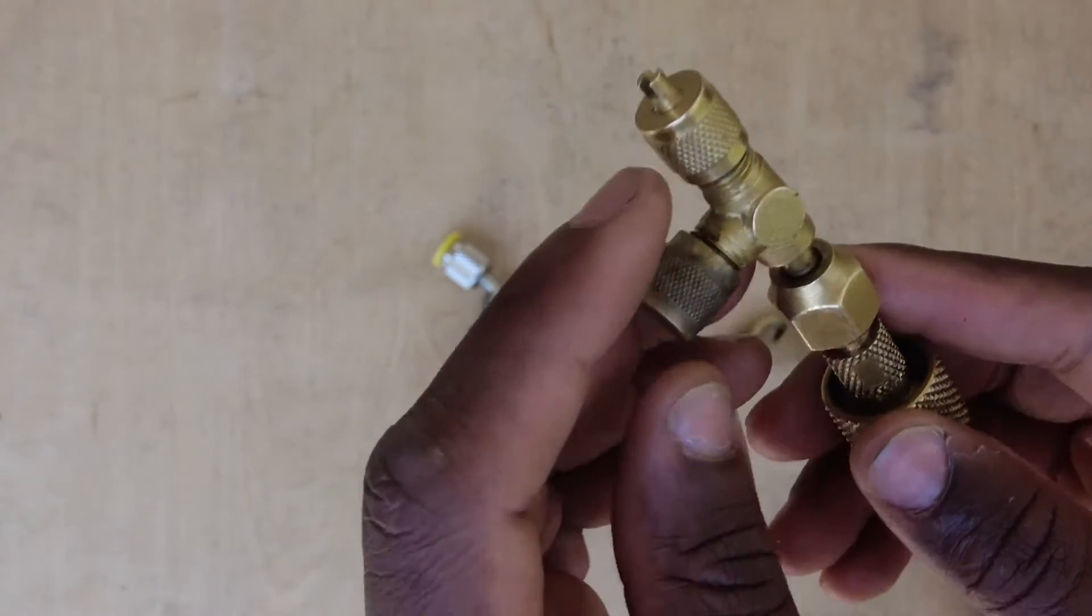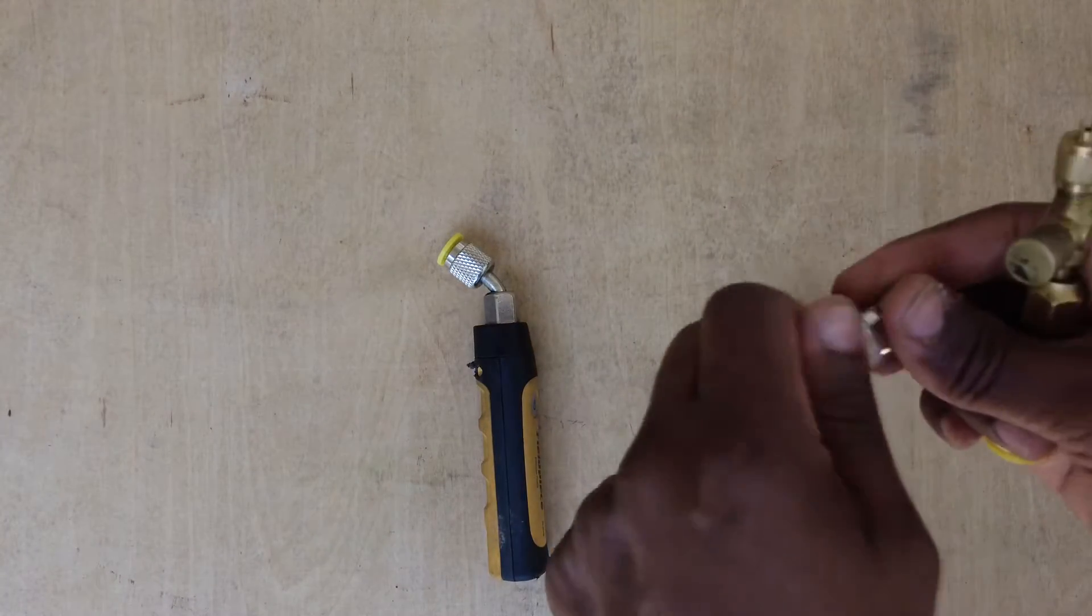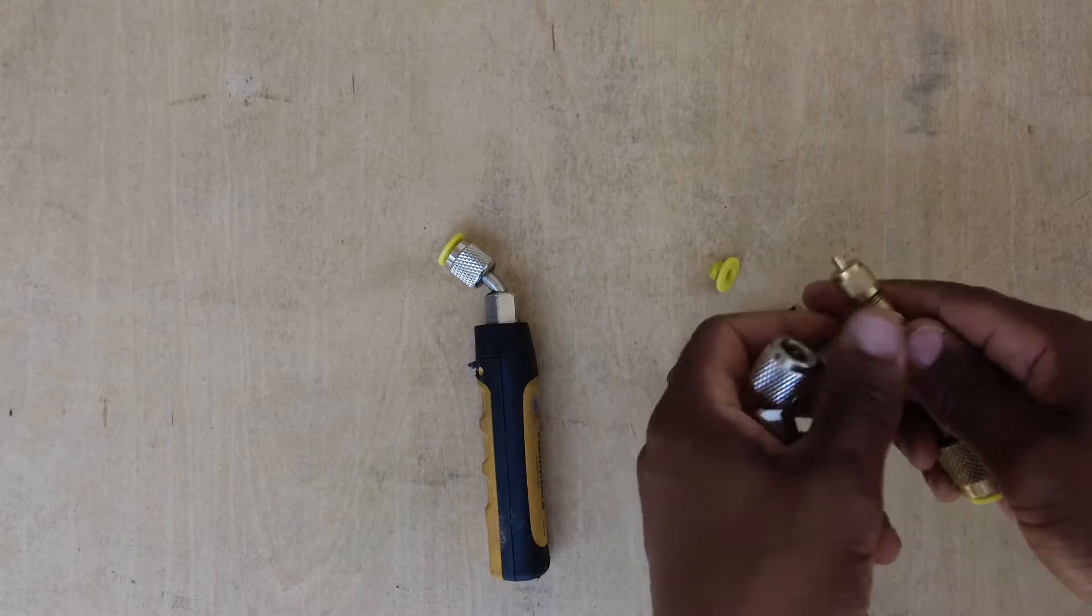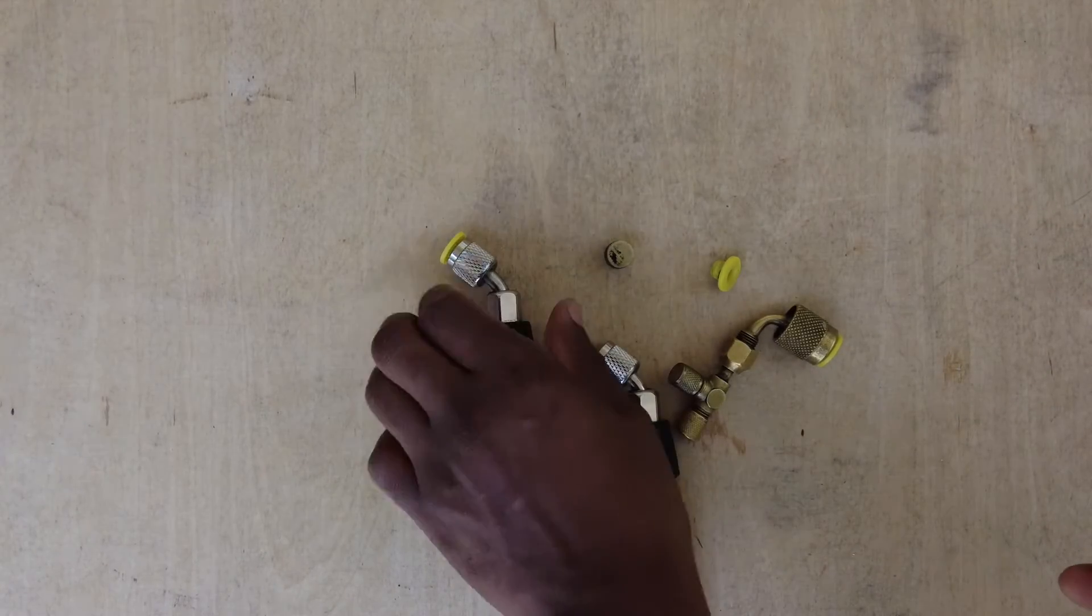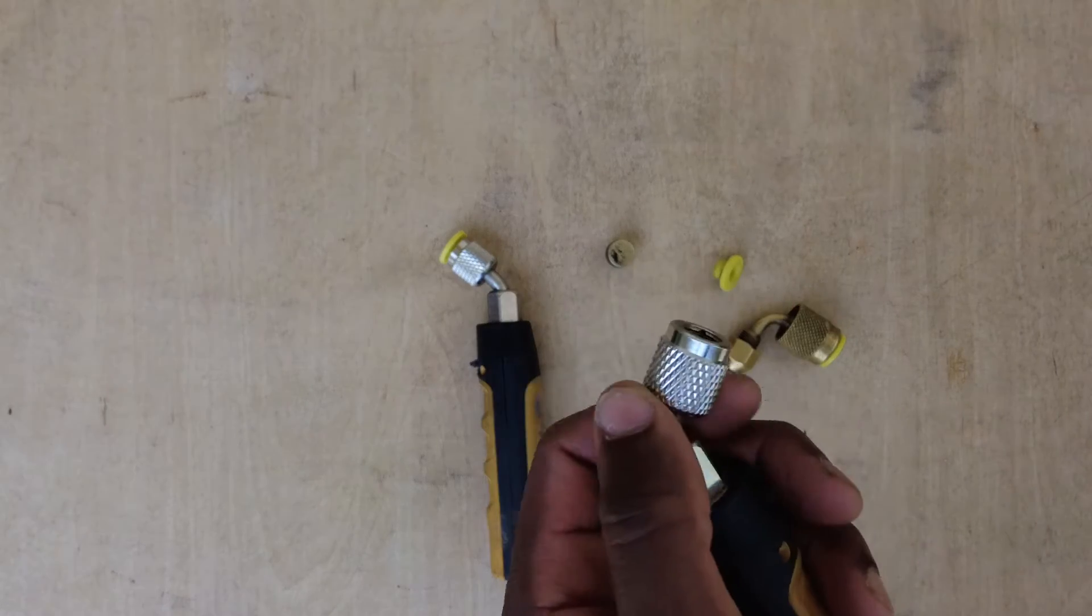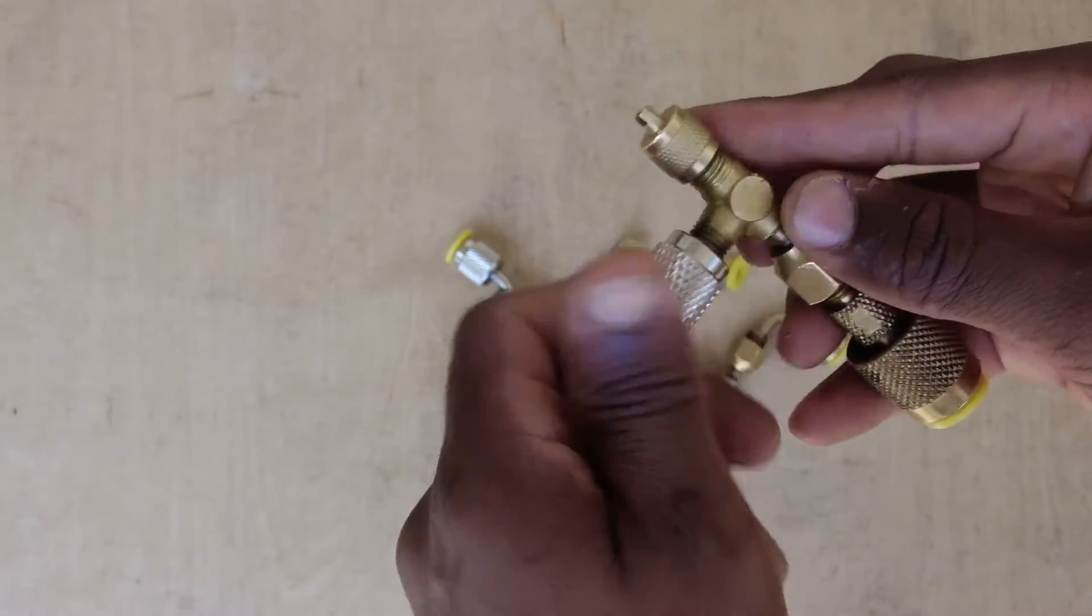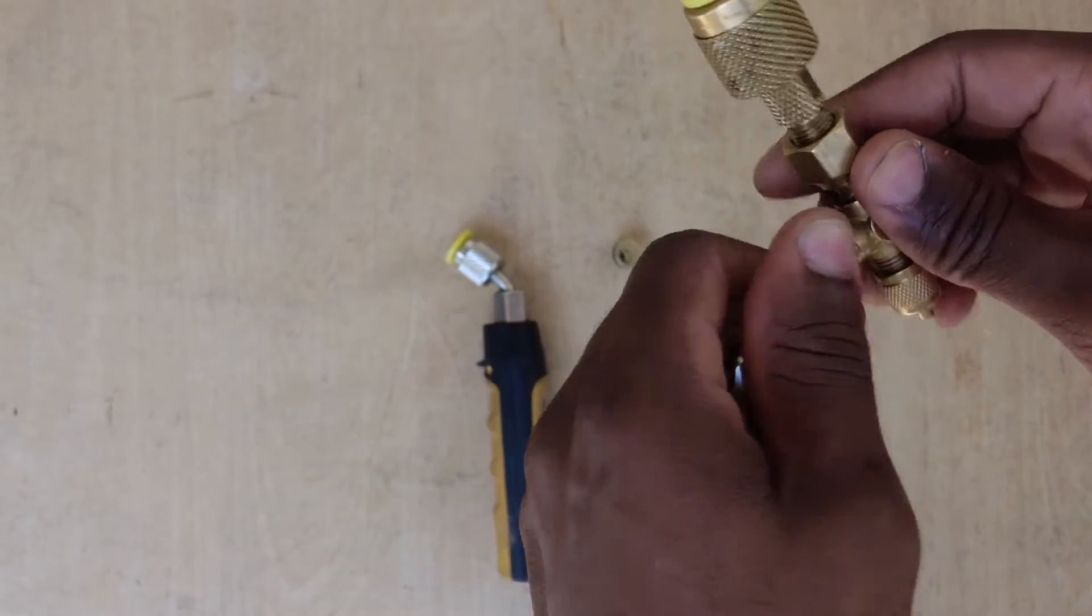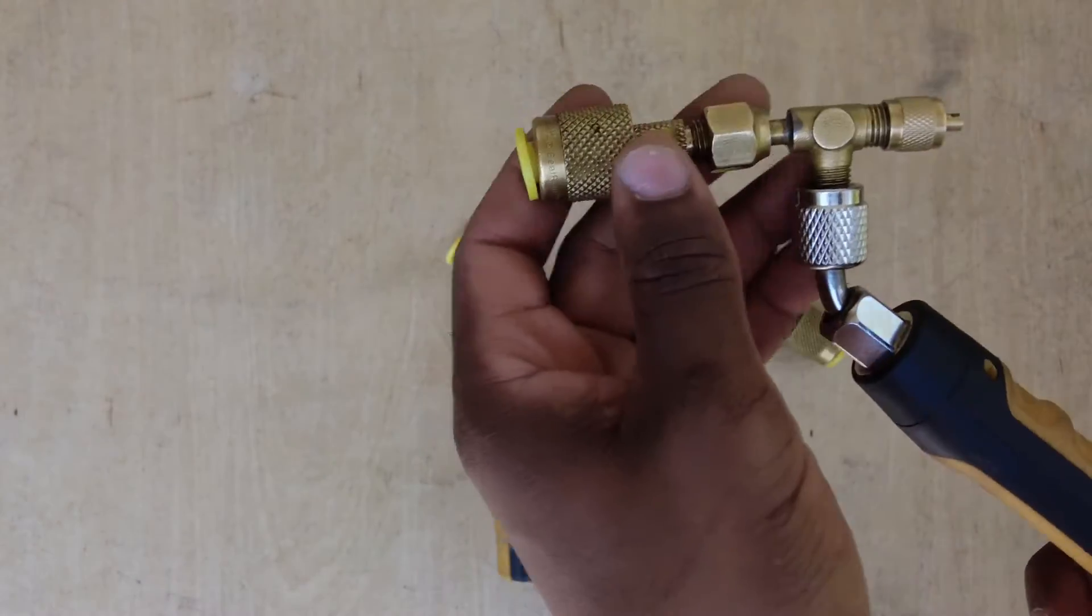So these are two separate parts. This is a T, and I use this T on both my suction and the liquid probe, low side and high side. But I'll put the T on like such, and that way I'll connect it to the actual suction line.